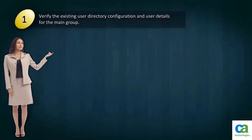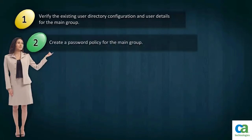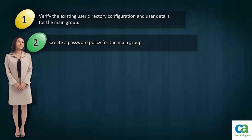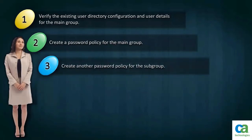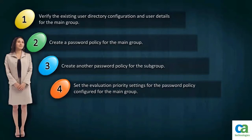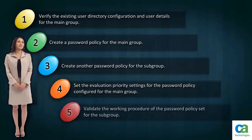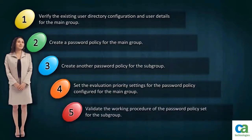First step, I need to verify the existing user directory configuration and user details for the main group. Secondly, create a password policy for the main group. Then, create another password policy for the subgroup. After that, set the evaluation priority settings for the password policy configured for the main group. Finally, validate the working procedure of the password policy set for the subgroup.